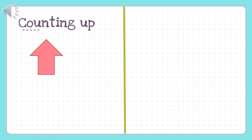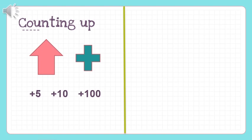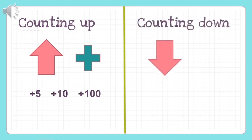Just remember: when you say counting up, you're going to add numbers such as fives, tens, or hundreds, depending on the number pattern, and it will always be in ascending order — from smallest to biggest. When you say counting down, you're going to subtract or minus — twos, fives, tens, or hundreds, depending on the number pattern — and it will always be in descending order, from biggest to smallest number.